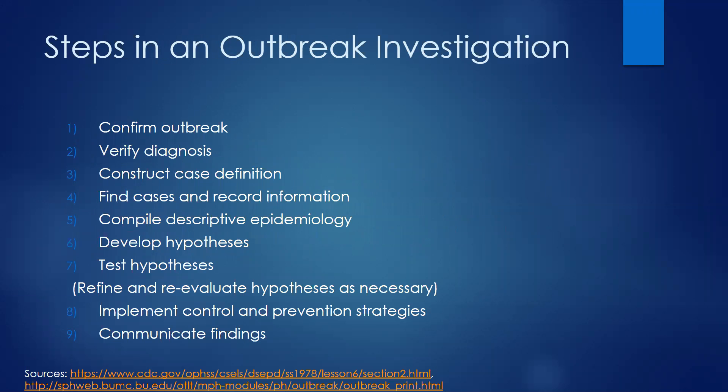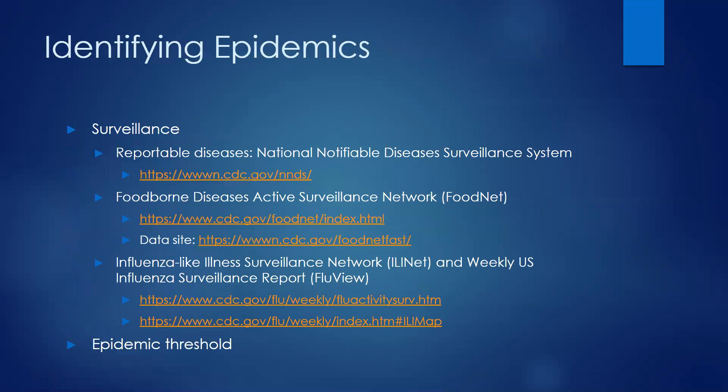The first step in an outbreak investigation is to actually make sure that you have an outbreak going on. Sometimes we get clusters of cases, or a small group of cases might be an unusual thing to see of a particular disease. So we do want to do some work first to make sure it's actually an outbreak. We talked last time about some surveillance data sources that might be useful for understanding what the expected level of disease is in a community. It can also be helpful to set an epidemic threshold at the local level.